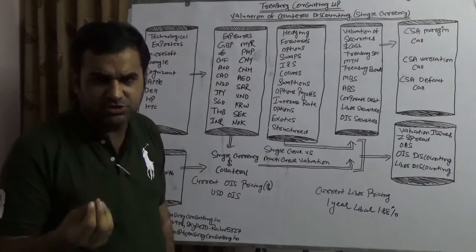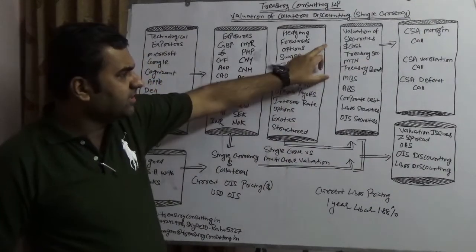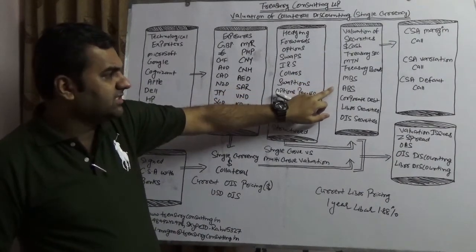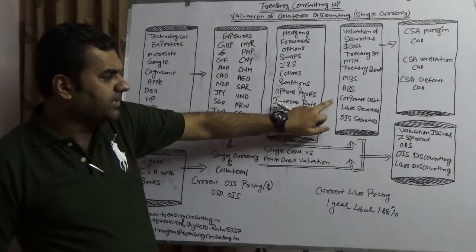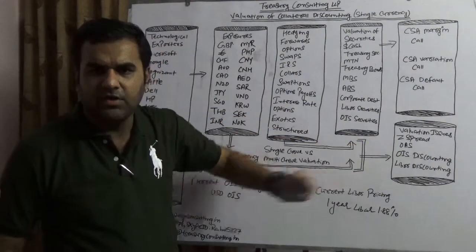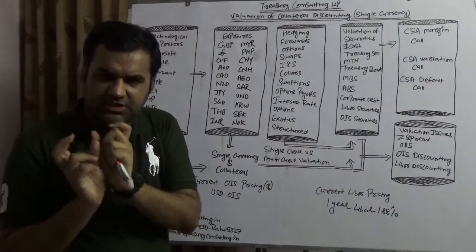Sometimes it could be reinstalled also. In case of a security, which is treasury securities, medium-term notes, mortgage backed securities, asset backed securities, corporate debts, LIBOR, and OIS discounting, these issues will certainly come. Swap spread issue would certainly become. Another issue that would be coming, can we do the cross valuation in a single currency CSA?